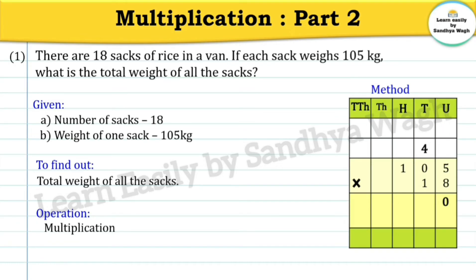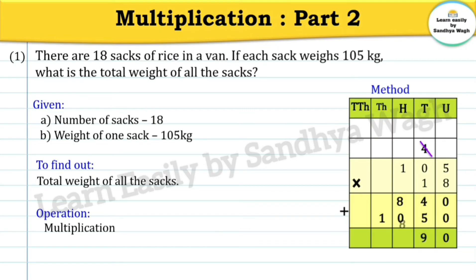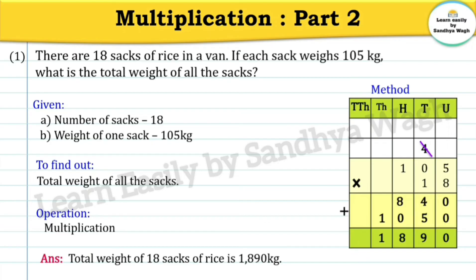105 multiplied by 18. Eight fives are 40, write 0 in the units place and 4 will go as a carry over. Eight zeros are zero, zero plus four is four. Eight ones are eight. Now write zero and one five is five, one zero is zero, one one is one. Adding: zero plus zero zero; four plus five nine; eight plus zero eight; and one. Our final answer is the total weight of 18 sacks of rice is 1890 kg.